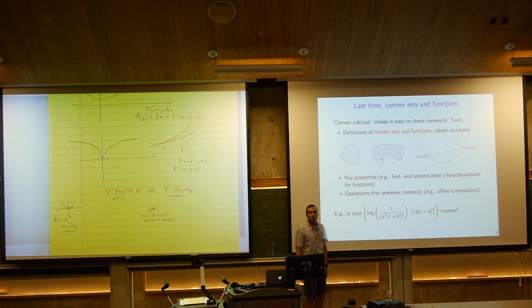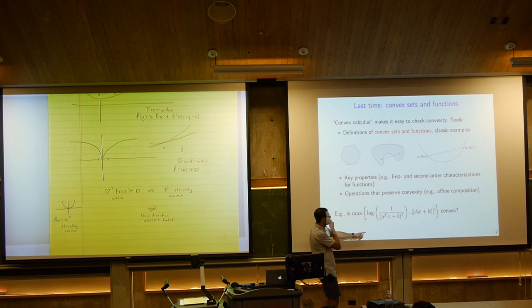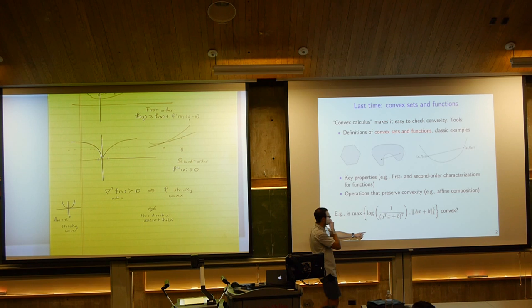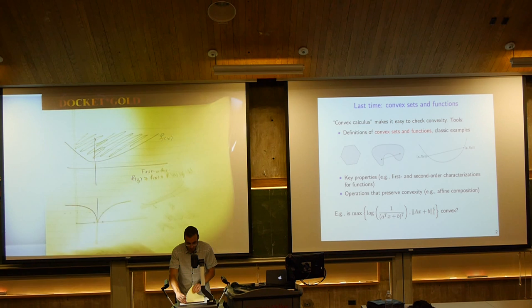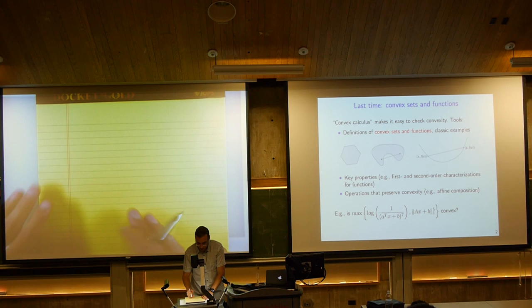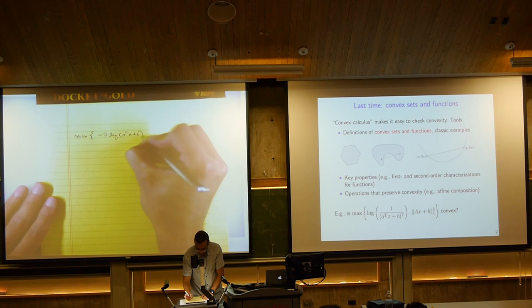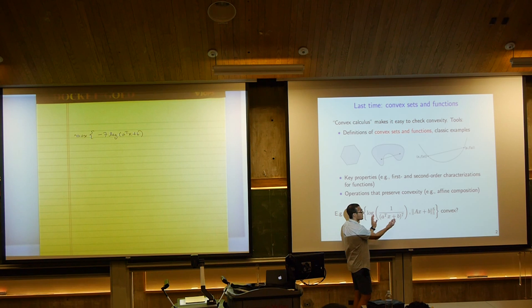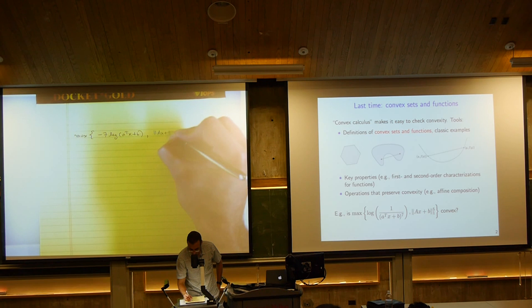One approach: rewrite as -7 log(aᵀx + b) using the property of logs that powers pull out front. It suffices to check convexity of a simpler function first, then get the full version by affine transformation. Log is concave, so minus log is convex, and the max of two convex functions is convex — applying the maximization rule we learned.